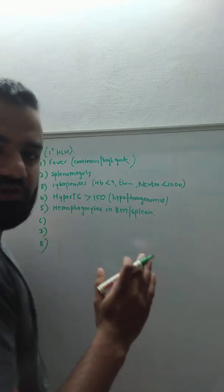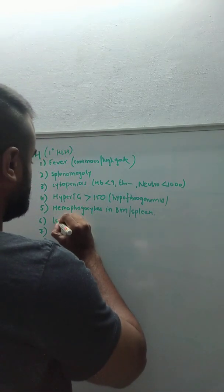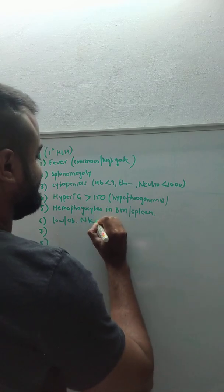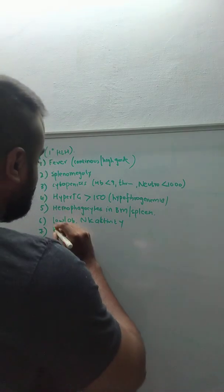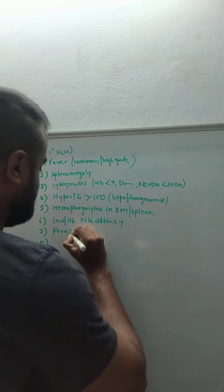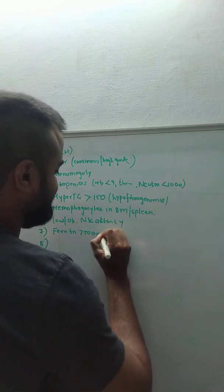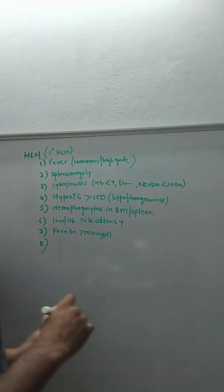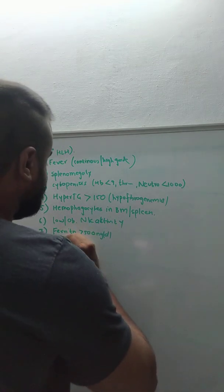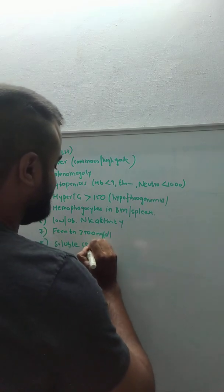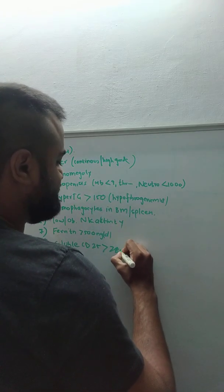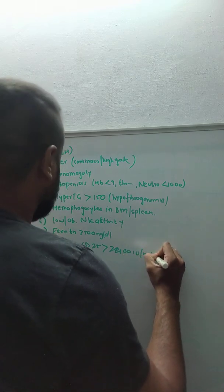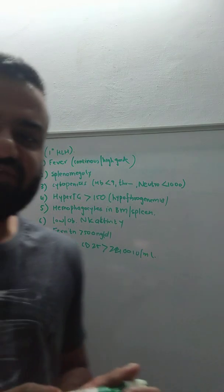When you estimate natural killer cell activity, there is low or absent natural killer activity. Ferritin is more than 500 nanograms per deciliter, and soluble CD25 is more than 2400 IU per mL. Out of these eight criteria, if at least five are present, you label the patient as HLH.